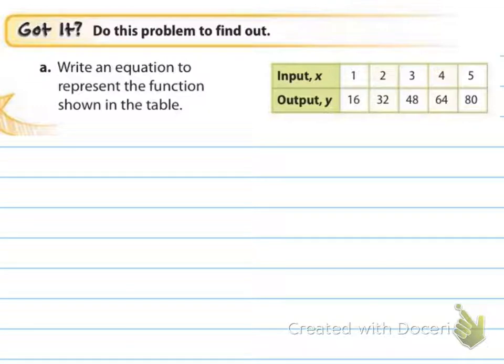It says write an equation to represent the function shown in the table. Go ahead and pause the video now. When you come back, I'll have the answer. Okay, hopefully you figured out that your function rule would be Y equals 16 times X. Because if X is one, the Y was 16. When X is two, it's 32, which is two times 16 equals 32. If you notice that each of those would work, then you know you're correct. Don't just do one. Keep continuing that pattern and make sure it works for every one of them, especially if they give you the input-output table all filled in.